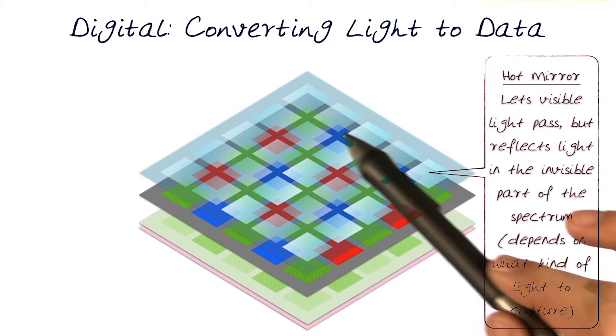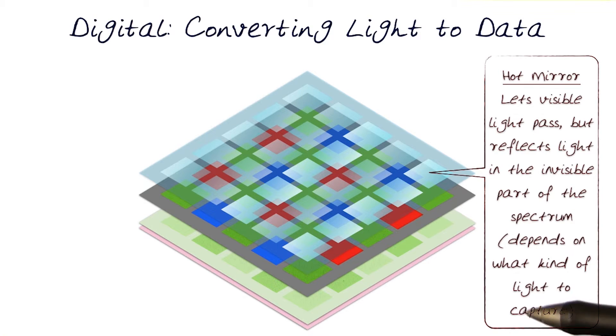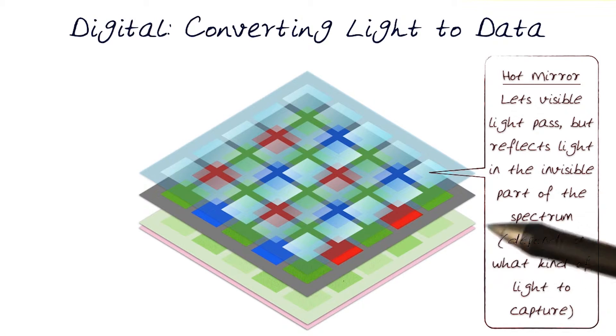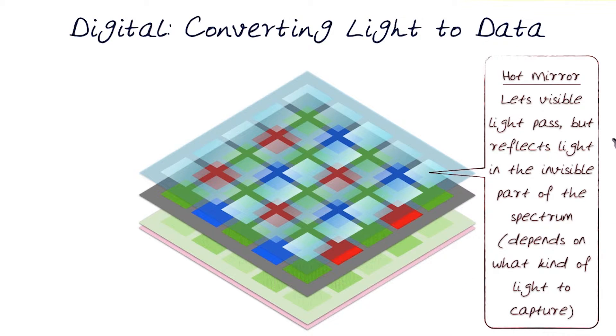It prevents it from hitting the sensors below. So this does simple filtering and prevents unnecessary light from hitting. Of course, different types of cameras would do different things. For example, if you wanted to build a UV camera, this would not be filtering out the UV light. In fact, it would be amplifying it.